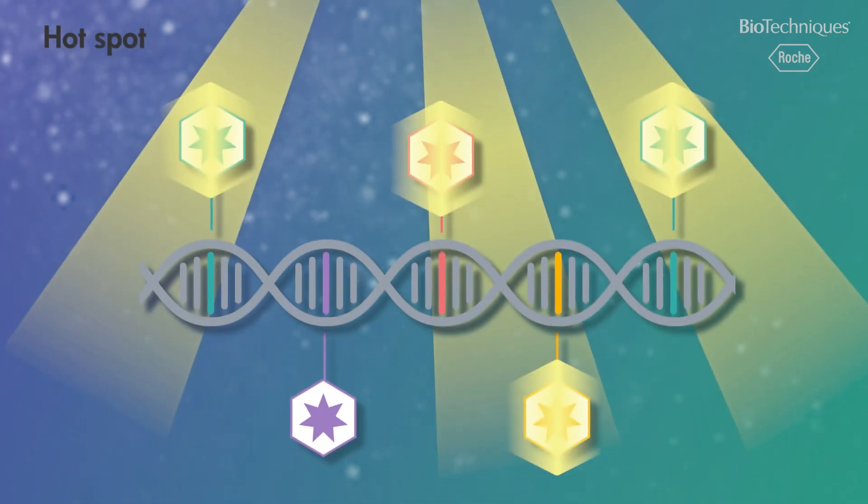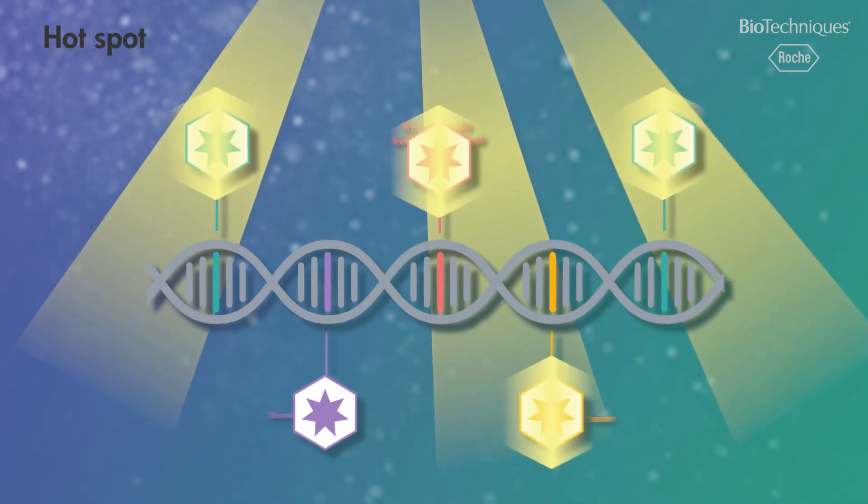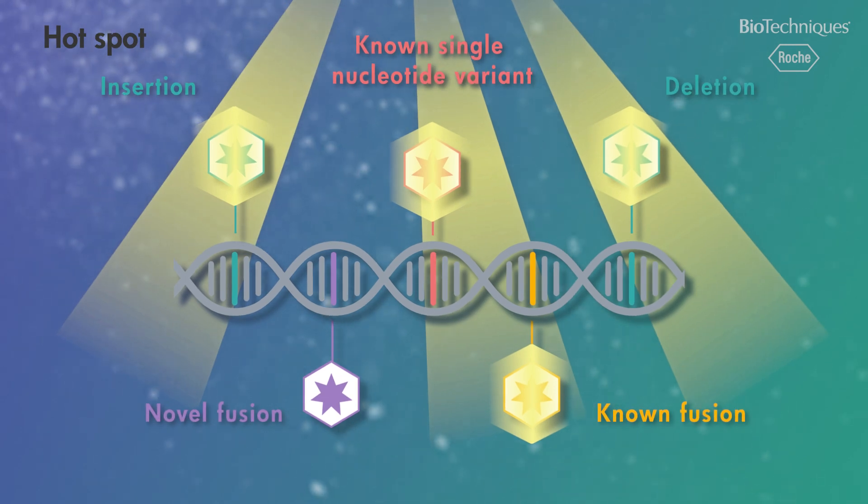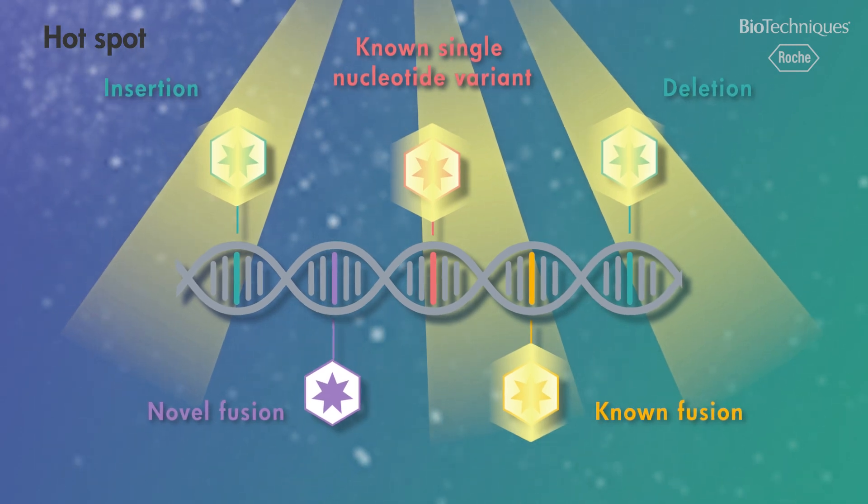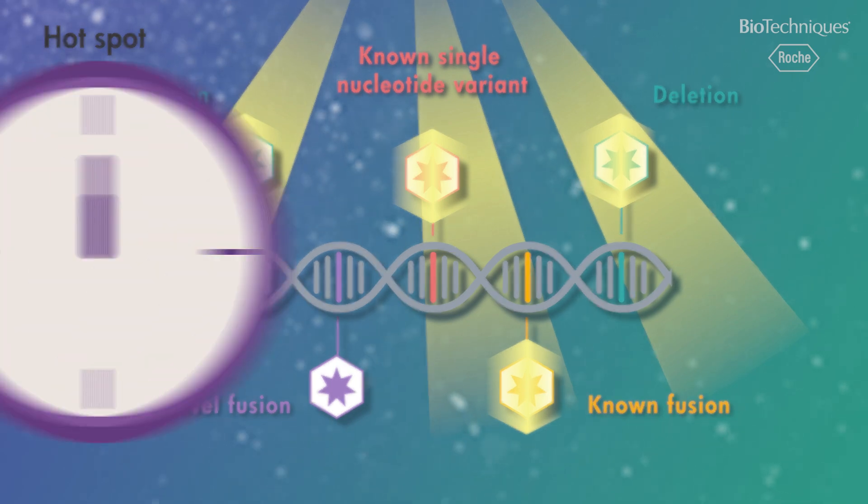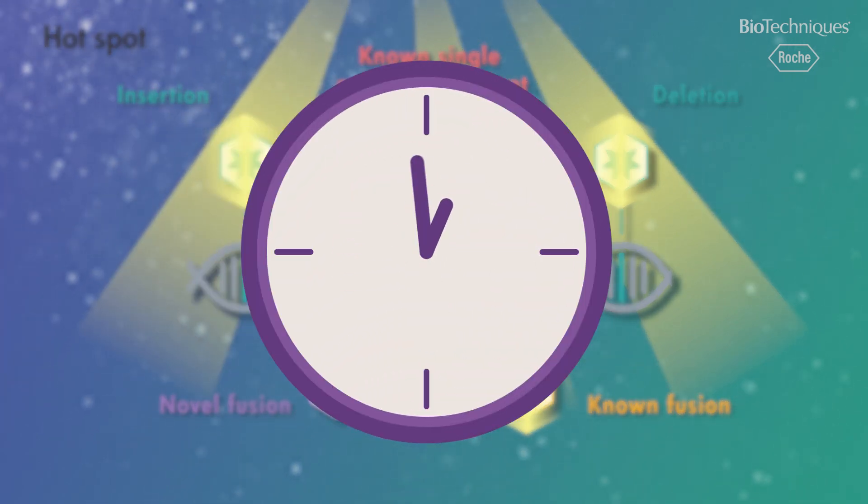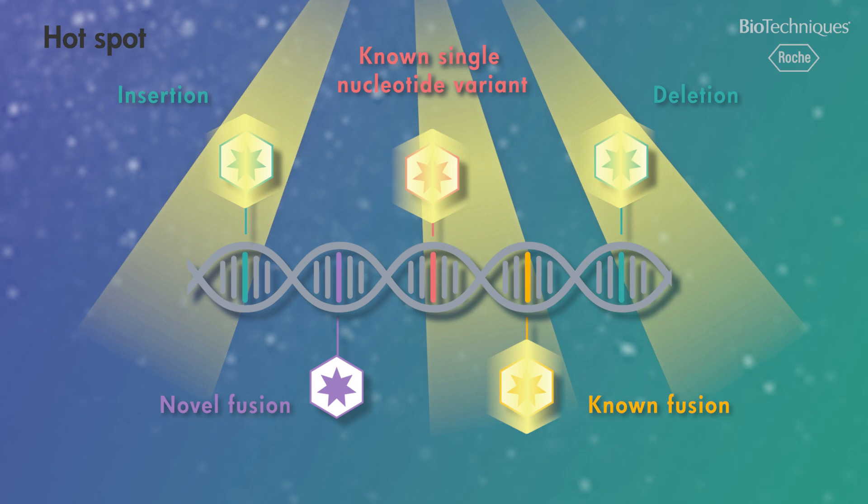Next generation sequencing with hotspot panel assays cast a slightly wider net, but even this method interrogates only a few known mutations in a limited number of cancer related genes. Hotspot sequencing requires more hands-on time than PCR assays, but it does reveal more genomic variants, although it still detects only a limited range of genomic variant classes.